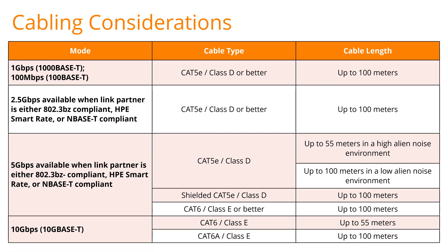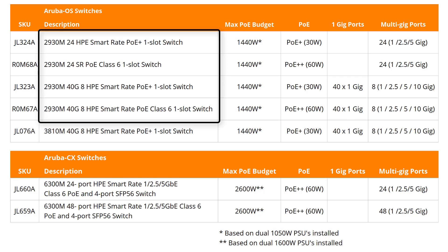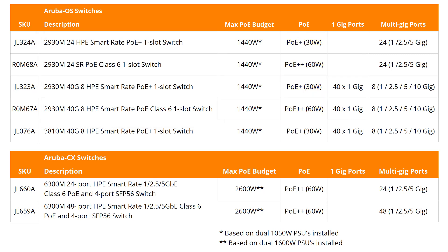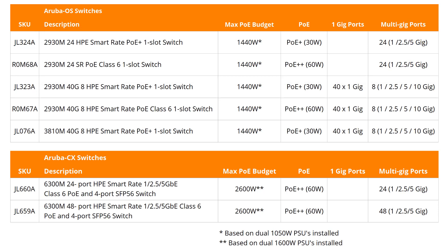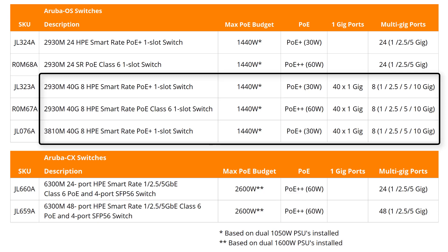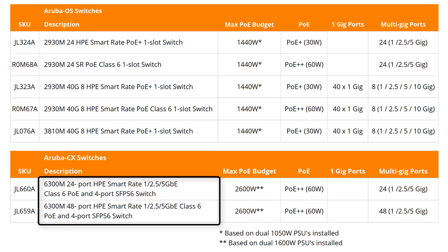Now let's look at Aruba switches and access points with SmartRate ports. This table shows Aruba switches that come with HPE SmartRate ports. The 2930M has separate PoE Plus and PoE Plus Plus models, providing 24 ports that support up to 5 gigabit per second ethernet. The 2930M and 3810M switches provide 40 and 30 one-gigabit per second ethernet PoE Plus ports plus 8 SmartRate ports supporting up to 10 gigabits per second. Note that 2930M and 3810M switches only support up to 1440W maximum PoE budget with 2 PSUs installed. The new 6300M switches support a 2600W maximum PoE budget and come in 24-port and 48-port SmartRate models supporting up to 5 gigabits per second ethernet.